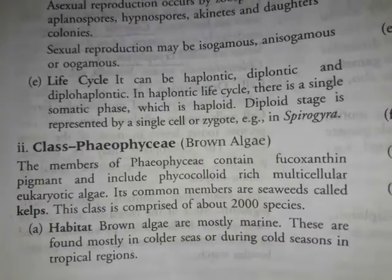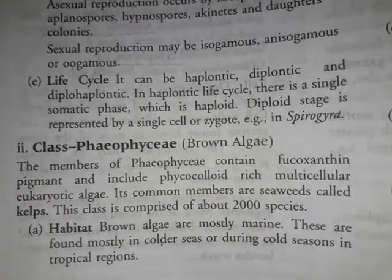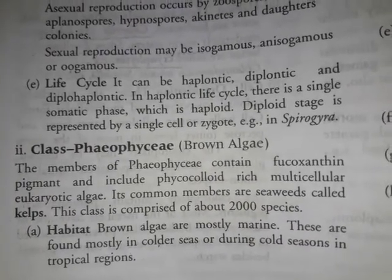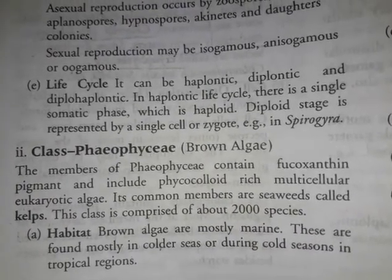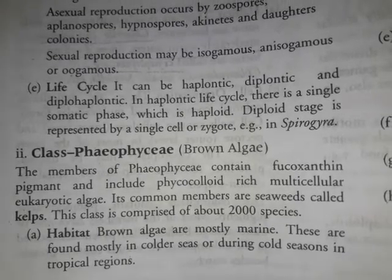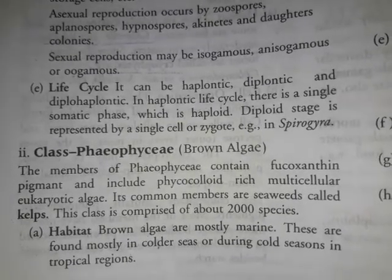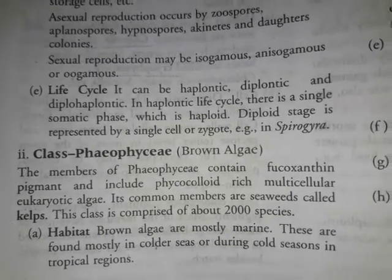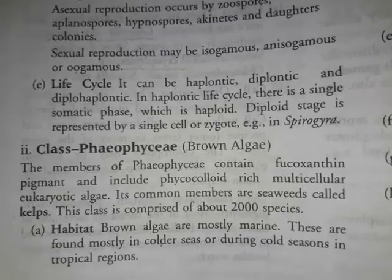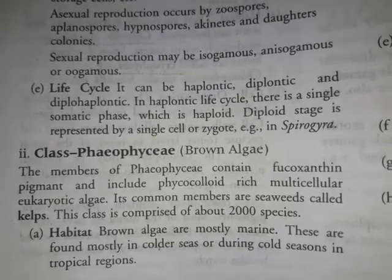In Phaeophyceae, the photosynthetic pigments are chlorophyll a and chlorophyll c.